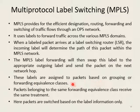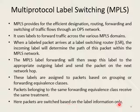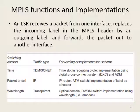Labels are assigned to packets based on grouping called forwarding equivalence classes. Packets belonging to the same forwarding equivalence class receive the same treatment and follow the same path. Packets are switched based on label information only — one label directs to destination Y, another to X, and they can exchange packets accordingly. Optical switching or cross-connectors can be used along with multi-protocol label switching.